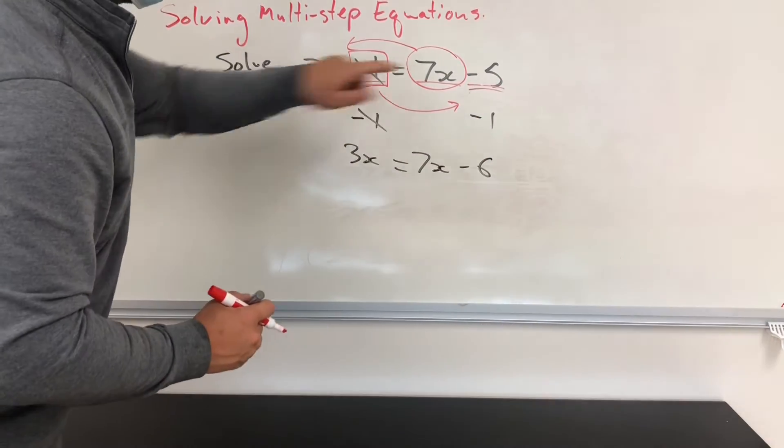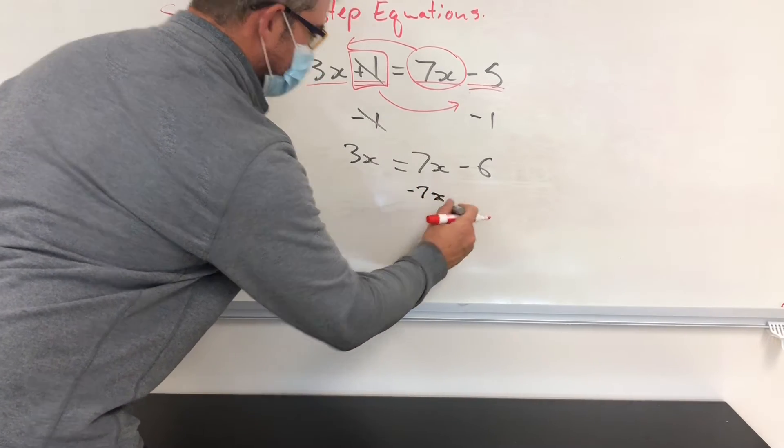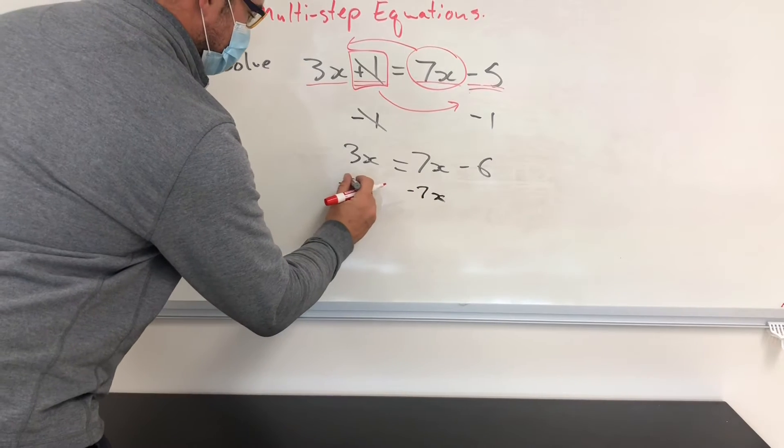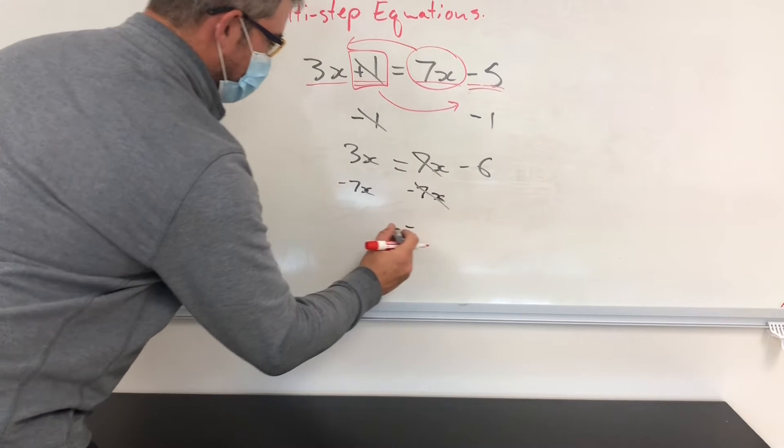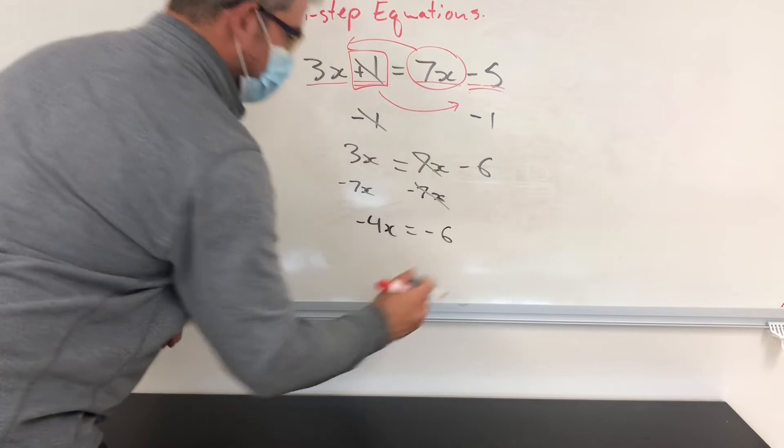Now, like I had said, I'm going to move this 7x over. So I'll do that by subtracting 7x. And what I do to one side, I must do to the other. So those, again, will cancel. And I'll be left with minus 4x is equal to negative 6.